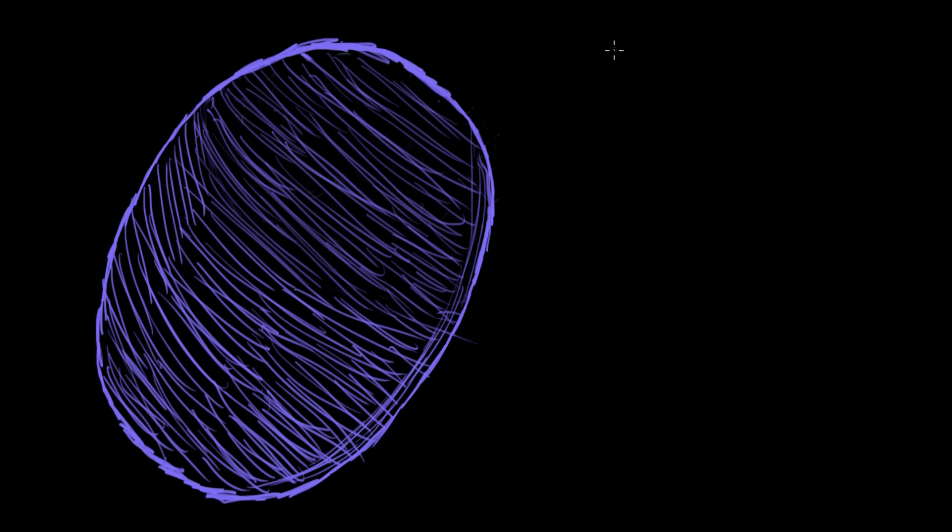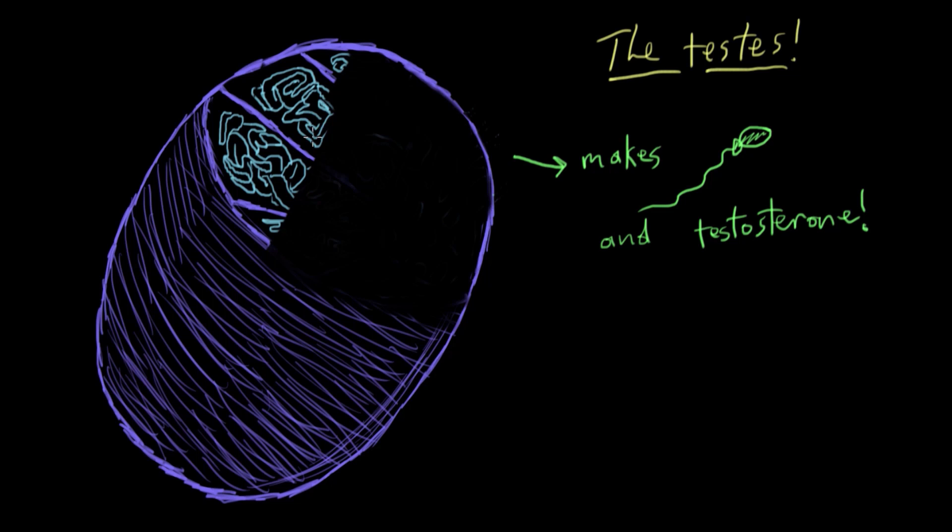We're going to talk about a pair of really important structures in the male reproductive system called the testes. They sit inside the scrotum and have two really primary functions. First, they produce the male's contribution to a baby, which is his sperm. Second, they make the majority of the major male hormone, testosterone. But we'll really only discuss the sperm production role for now. So let's look inside the testes and see what we find.